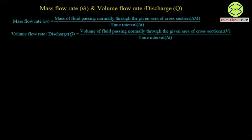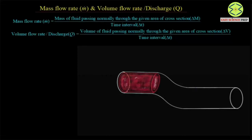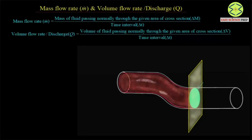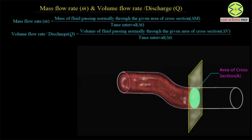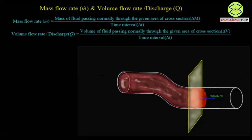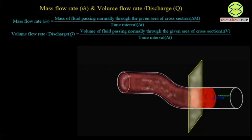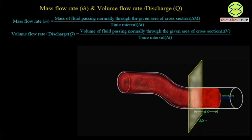To understand the concept of mass flow rate or volume flow rate, let us consider an example in which fluid is passing through a pipe. Here we have a pipe in which fluid is flowing. Fluid is going to cross a given area of cross section — let us say the area of cross section is A. The fluid moves towards the right with velocity v, and during its motion, a volume of fluid passes through the area of cross section undergoing a displacement delta x in the given time interval delta t.